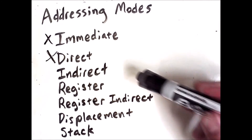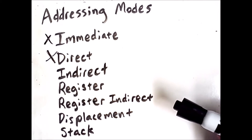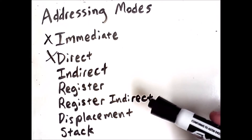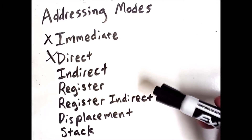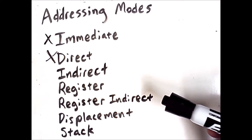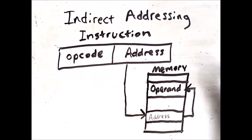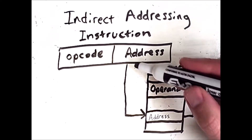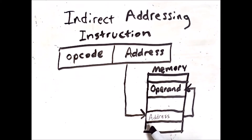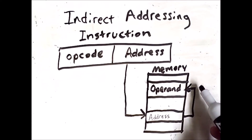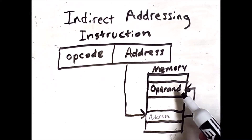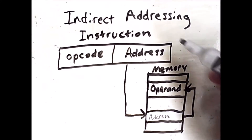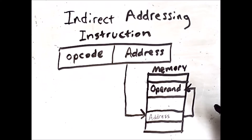The next addressing mode is indirect. This is where one memory address is contained in the machine instruction, which refers to a location in memory containing yet another memory address whose contents are the actual operand we want to access. The address in the instruction leads to a location in memory which contains another address, which points to another memory location where the actual operand is located. Note that an instruction with indirect addressing requires the CPU to do two memory lookups, so this type of operation is inherently inefficient, but still necessary in some cases.